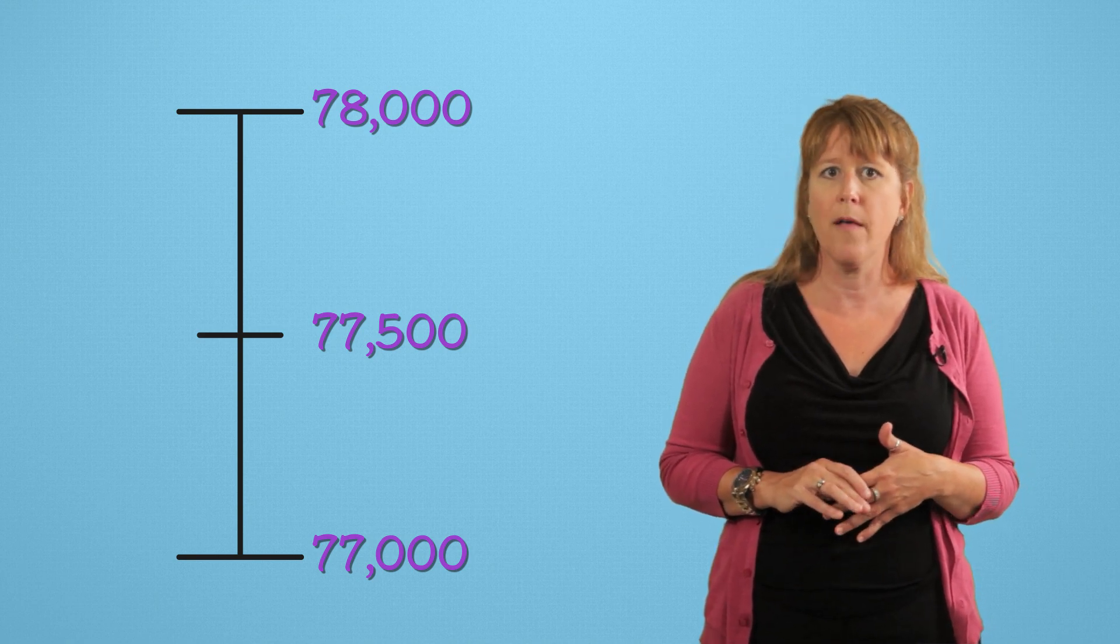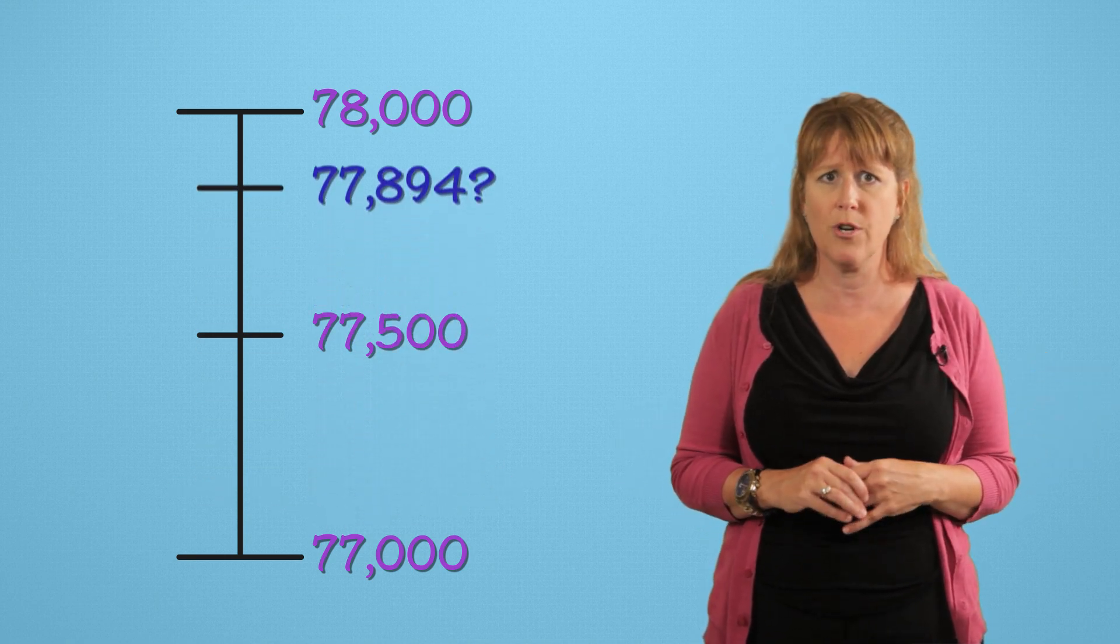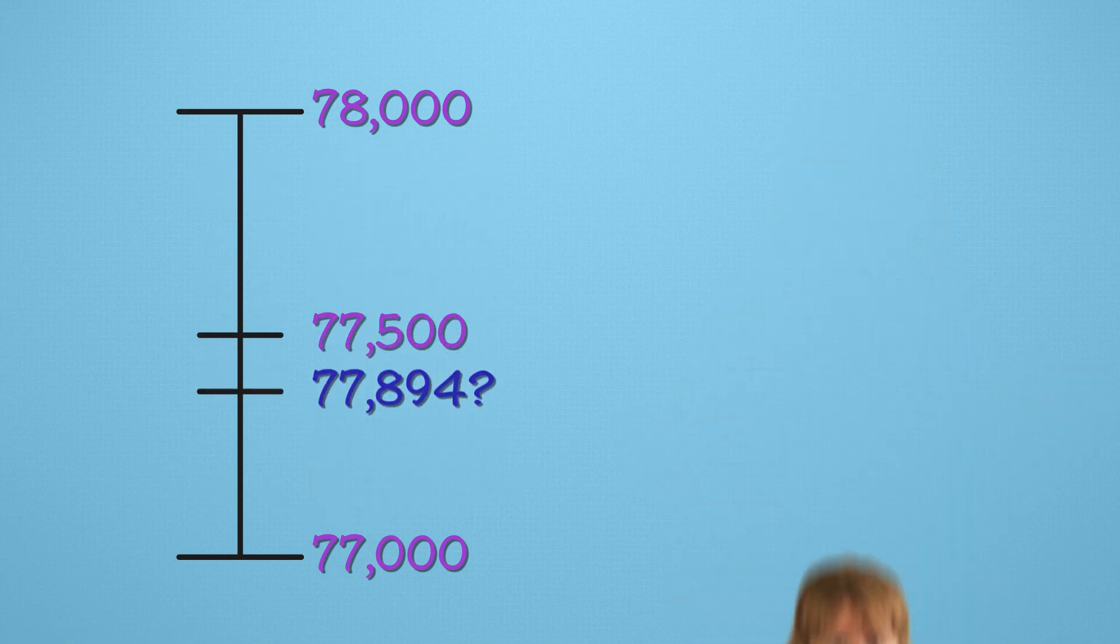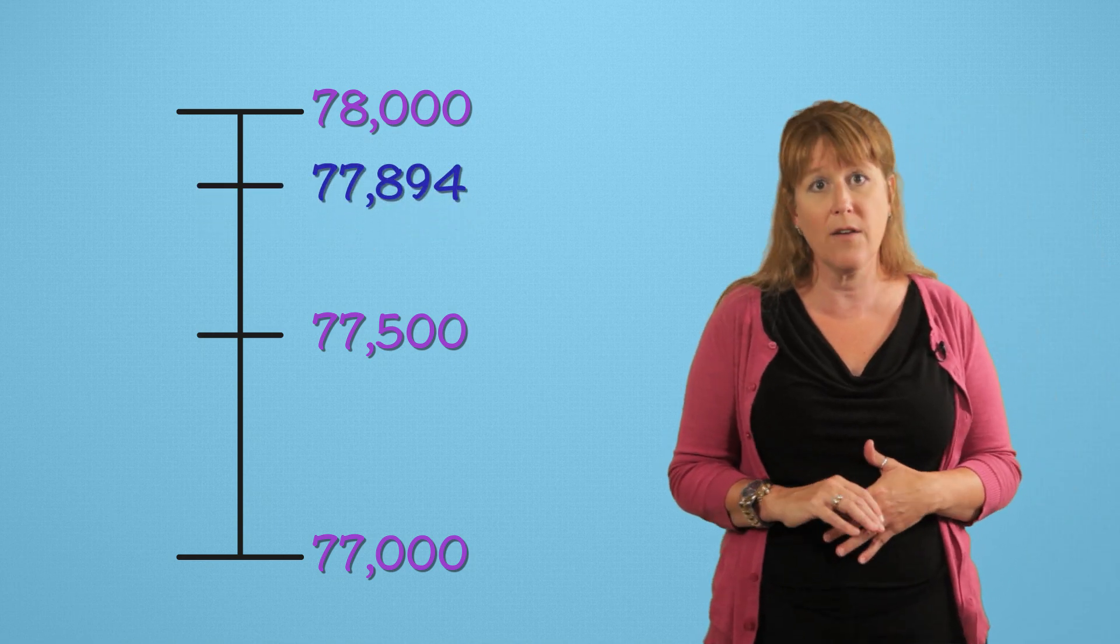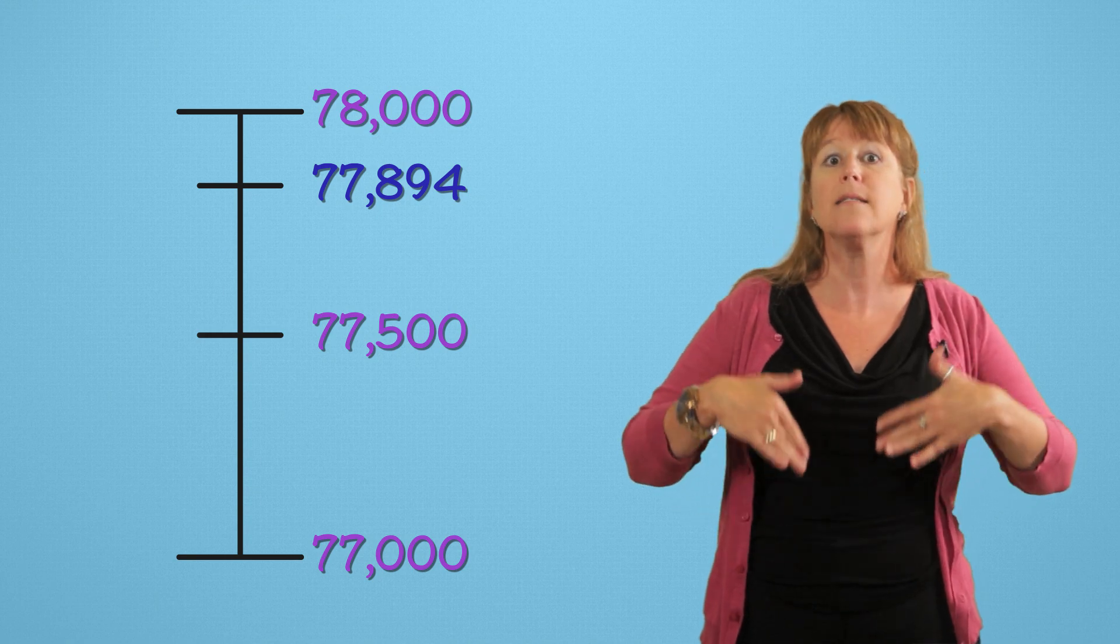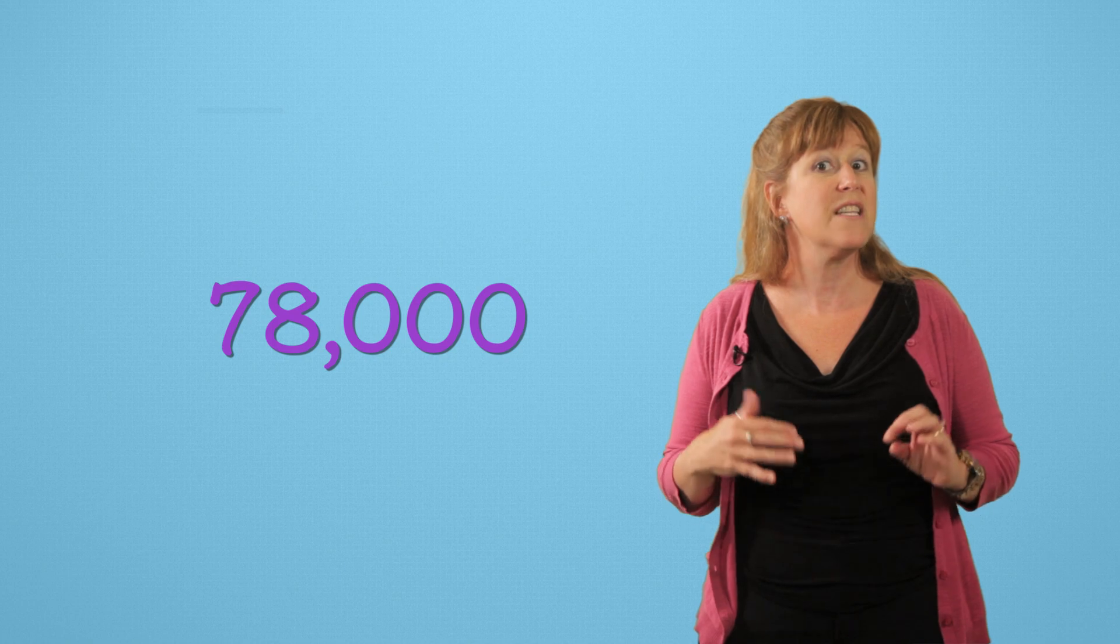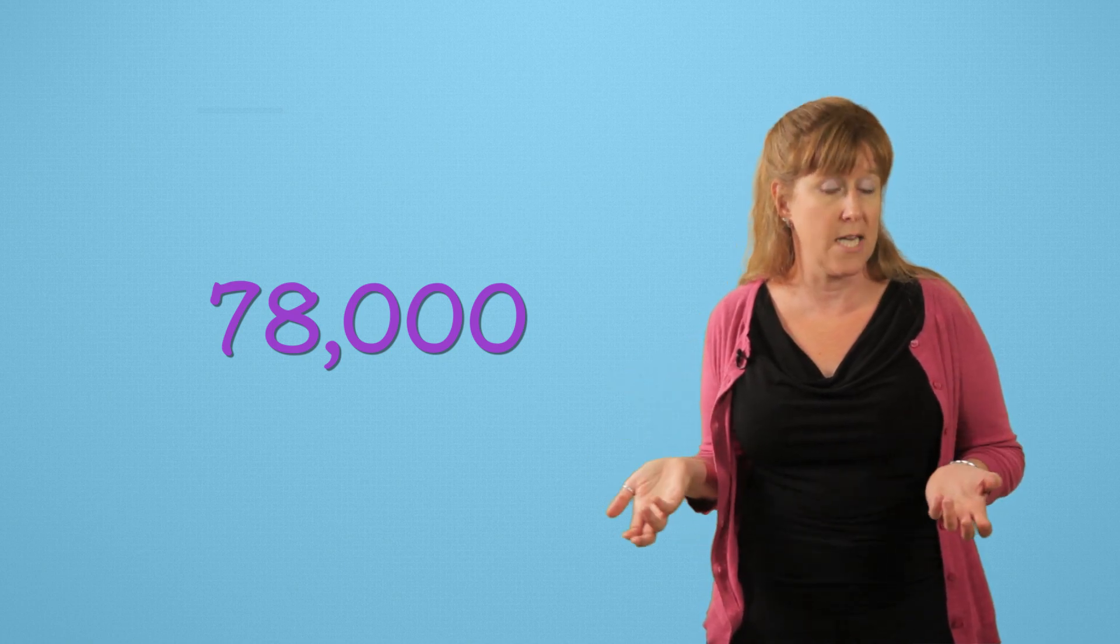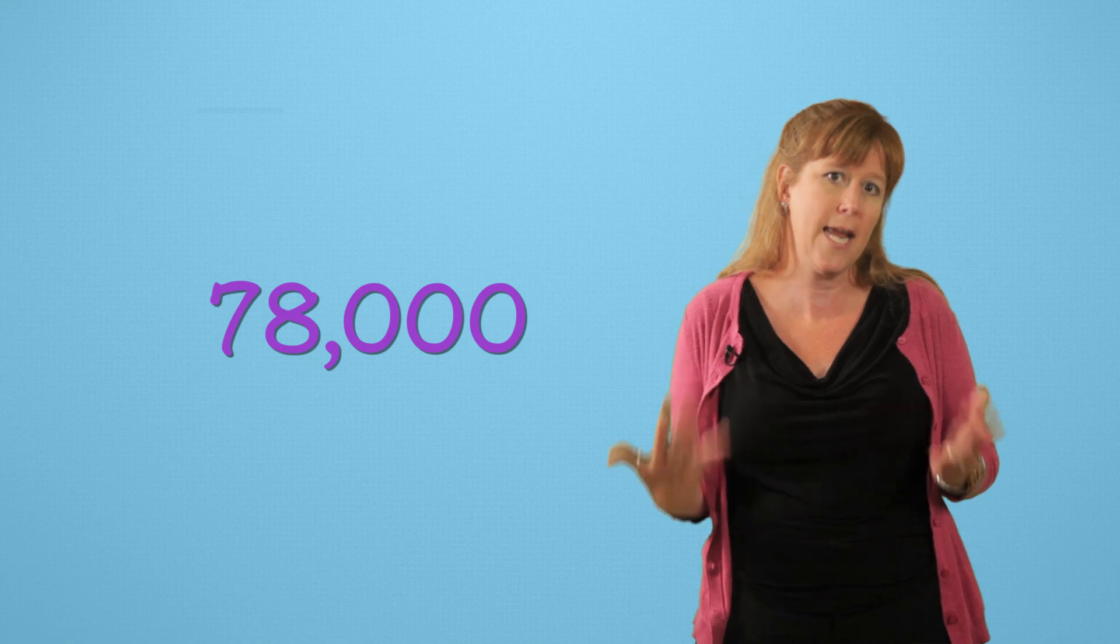Now let's mark our number on the line. About where is 77,894 going to be? Wow! 77,894 is really close to 78,000. And it's above the halfway point. So we'll round up. Now we've rounded to the thousands place and got 78,000. And we've rounded to the ten-thousands place and gotten 80,000.